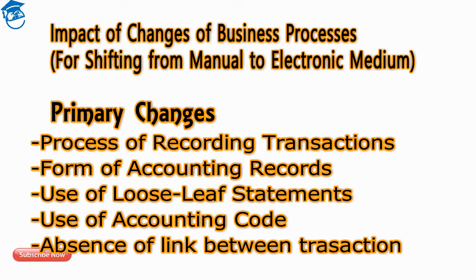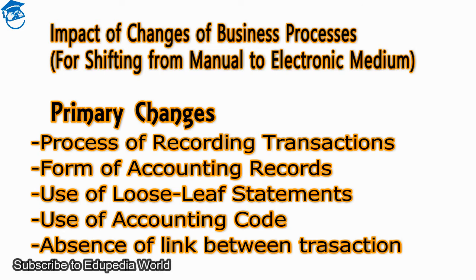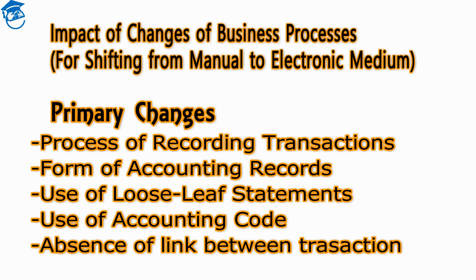The fifth primary change is the absence of the link between transactions. In a computerized information system environment, there may be inadequacy or total absence of a cross-reference system between documents, primary records, and principal records. This creates special problems for auditors, who may find it very difficult to trace a transaction from start to finish — raising doubts about the audit trail.